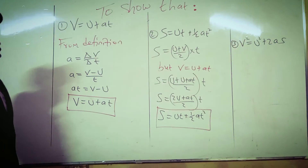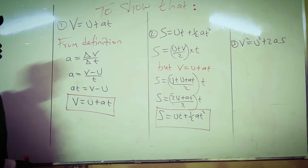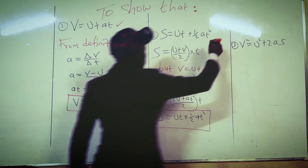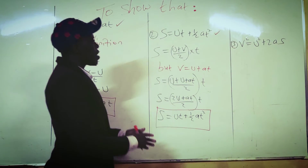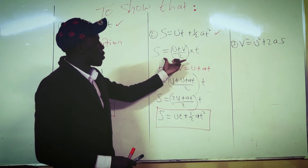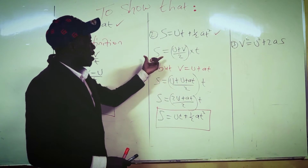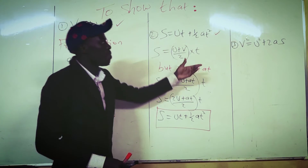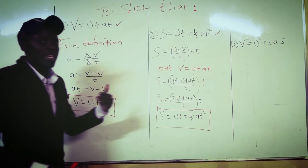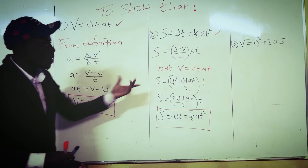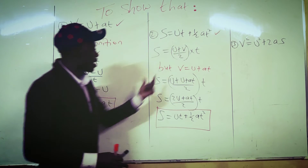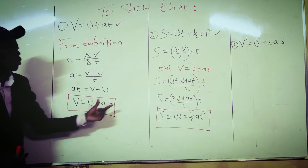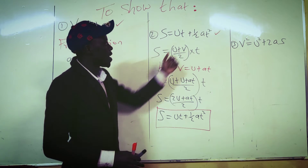We have now proved the first and the second equations. We showed that displacement equals average velocity times time for a body that is accelerating or decelerating, then replaced V using the first equation V equals U plus AT.